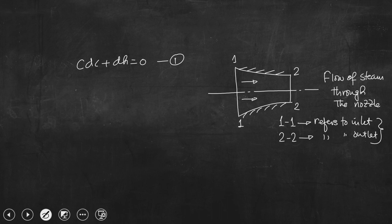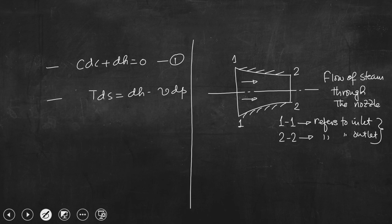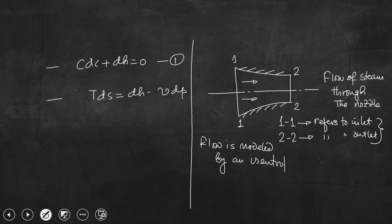From the last class, by applying the steady flow energy equation, we could write C dc plus dh equal to 0. This is equation number 1, obtained from the steady flow energy equation applied between section 1-1 and section 2-2. We assumed that the length of the nozzle is short so that the change in elevation between the two sections can be neglected. We also wrote the property relation: T ds equal to dh minus V dp.